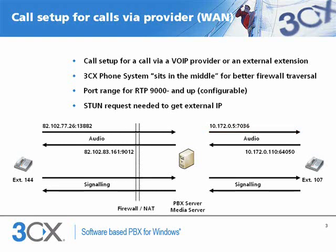The default setup for 3CX phone systems is to receive audio for the external leg of calls — i.e. VoIP provider or external extension — on ports 9000 to 9050. The internal leg of calls, to or from VoIP providers, is received on port 7000 and up. Of course these ports are configurable, but this way you can configure exactly on which ports audio should be received, and this greatly helps firewall configuration.